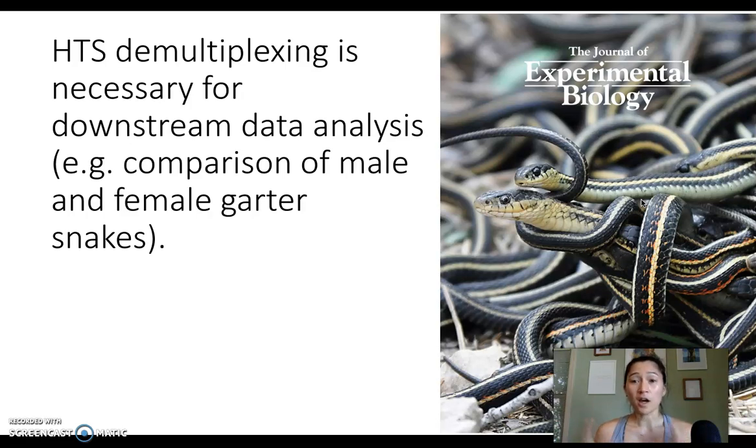For the high-throughput sequencing data that we're working with, which is from their study, we have to be able to separate out which reads came from the different samples—the male and female snakes—because that's the main question we want to answer. This demultiplexing step is essential to be able to answer our research question.